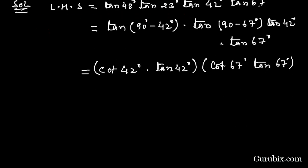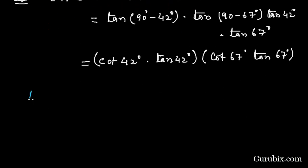We know a formula that tan θ times cot θ equals 1. We shall apply this formula here. Then this cot 42° tan 42° becomes 1, and this cot 67° tan 67° becomes 1. So 1 times 1 is 1, and this equals the right hand side. This is the solution of the question. Thank you.